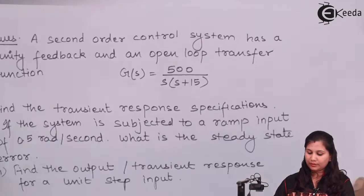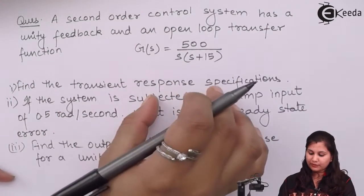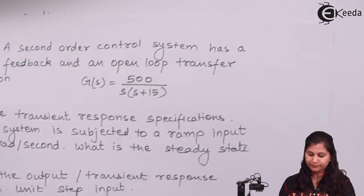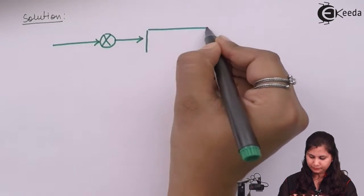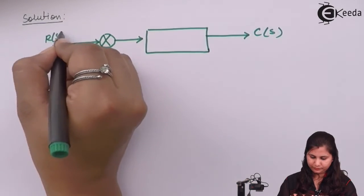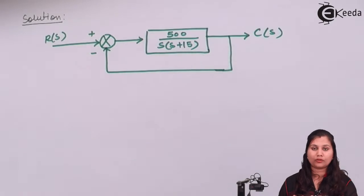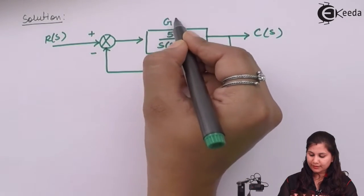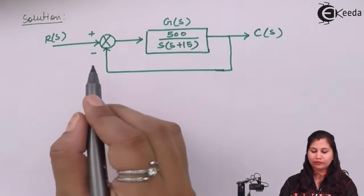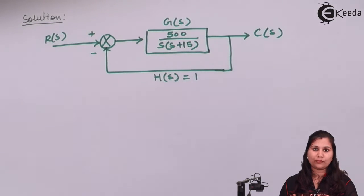We are given the open loop transfer function for this system, and it is a second order control system having unity feedback. First we will draw the block diagram for this system, and through this block diagram we are going to write the characteristic equation for this system.